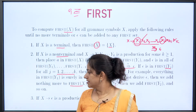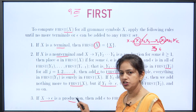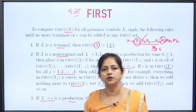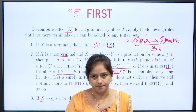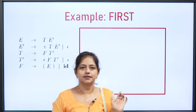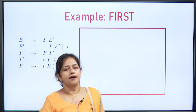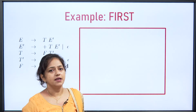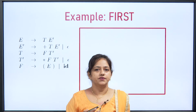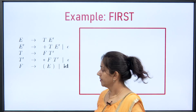The last case: if X → ε is a production, then we add epsilon to FIRST(X). Now we will understand this concept with an example. This is a grammar where we have eliminated ambiguity, eliminated left recursion, and done left factoring, and finally we have this grammar.